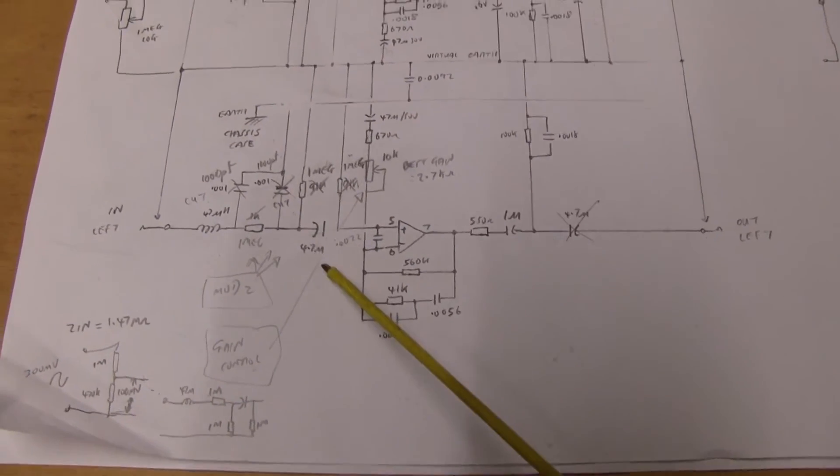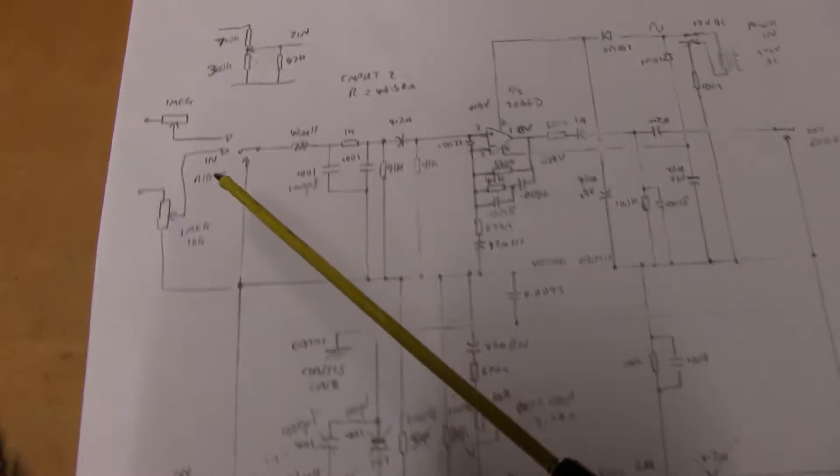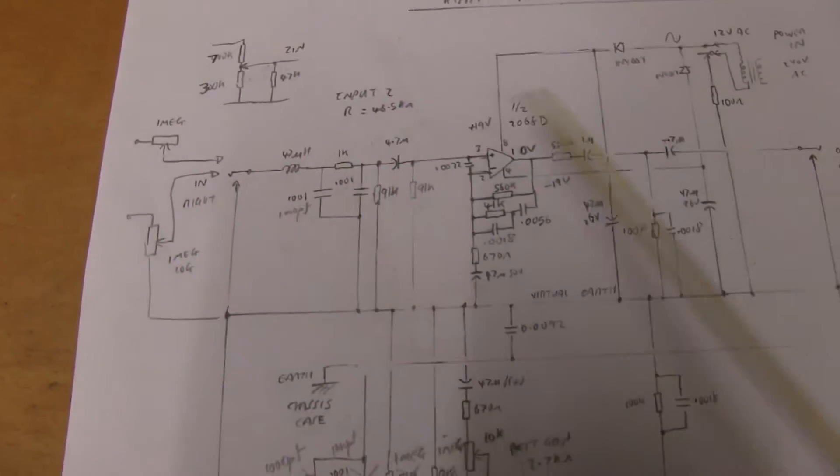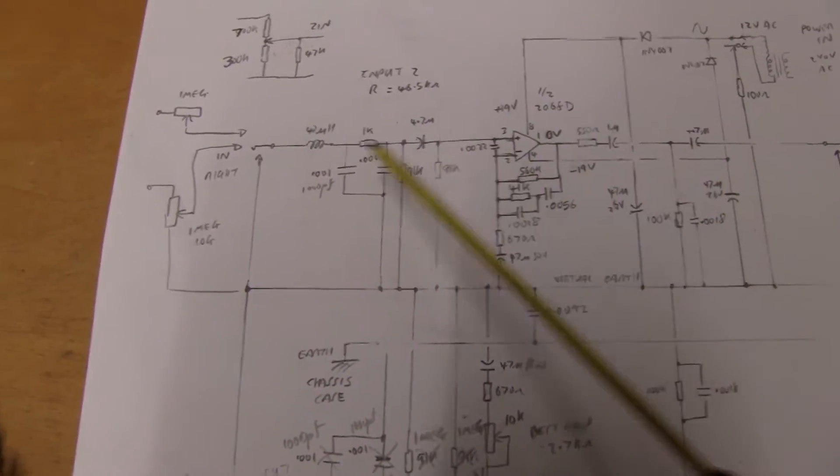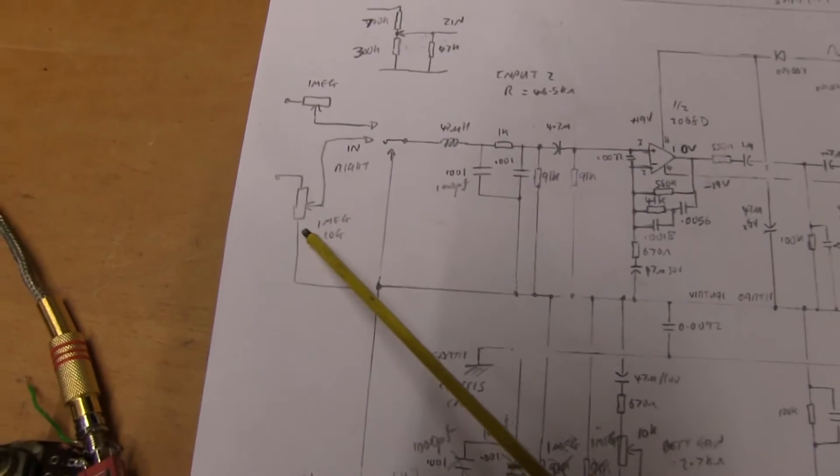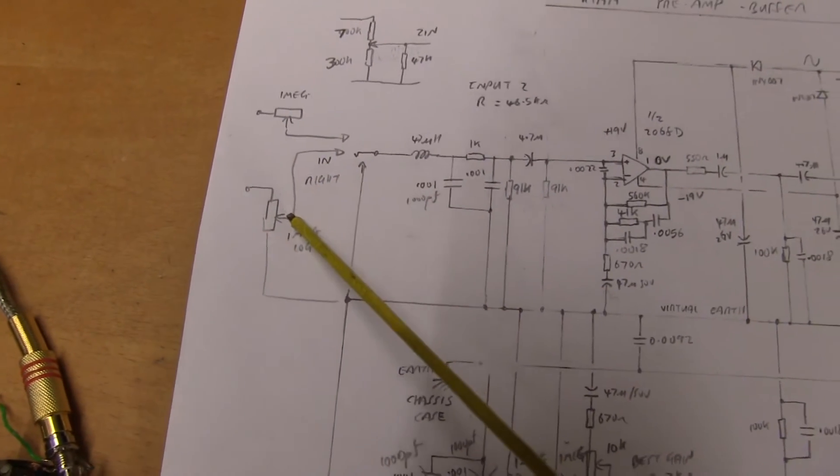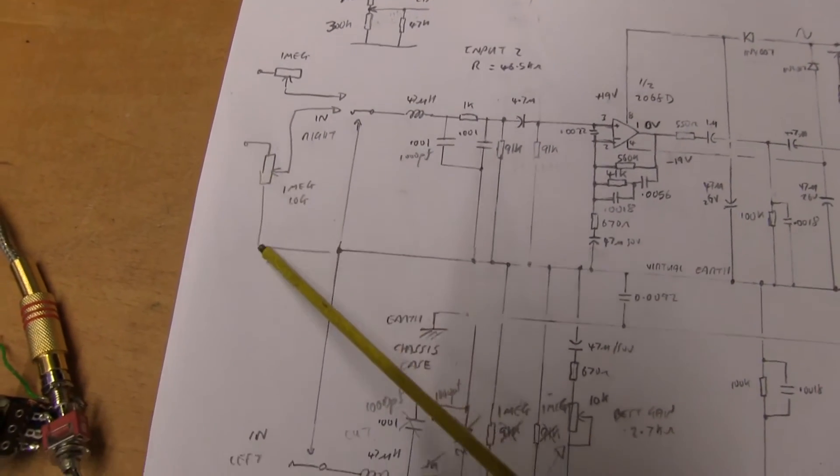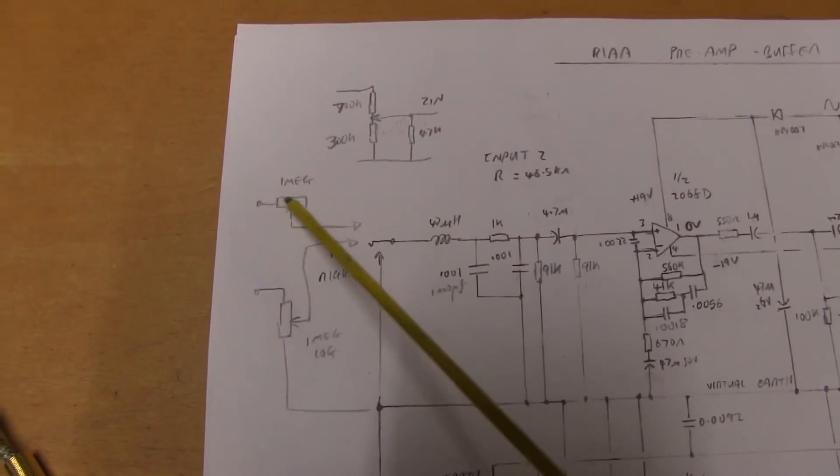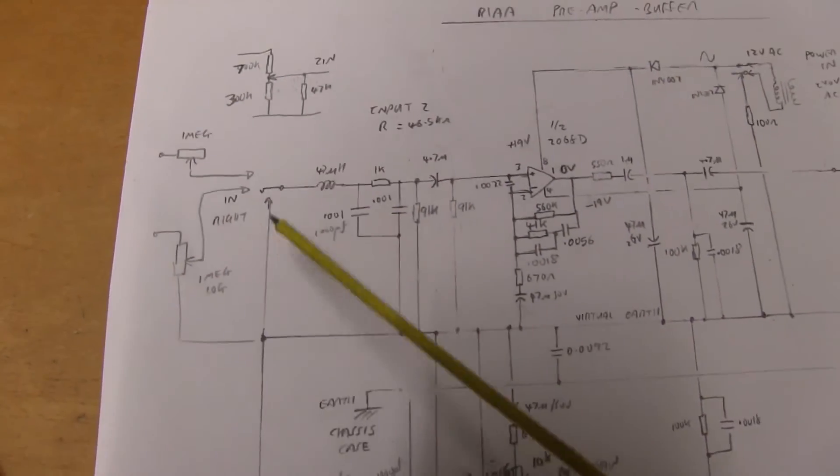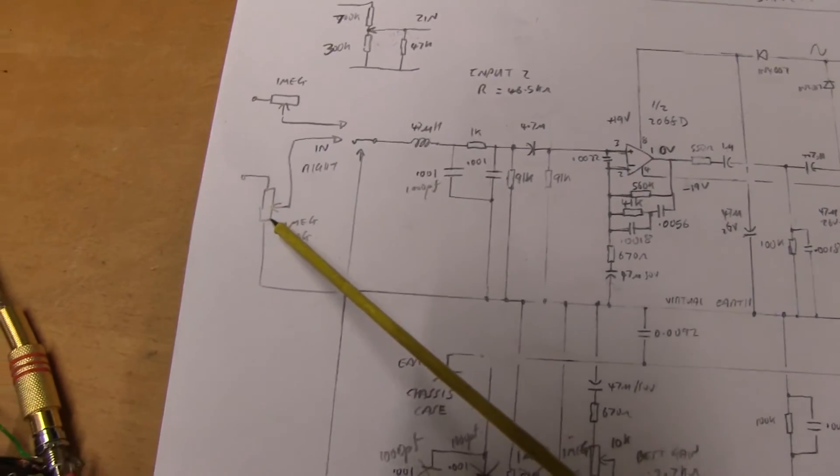But on the other channel I did a much simpler mod that changed nothing on the original circuit. I've just put a one meg pot on the input. You can either have it just to ground like that, or in fact you can just have it as a variable resistor. Now what happens here is this a one meg.